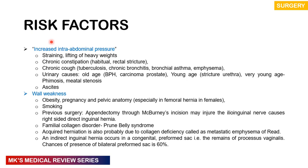Risk factors are largely either increased intra-abdominal pressure or weakness in the wall. Things that increase intra-abdominal pressure include straining, weight lifting, chronic constipation, chronic cough such as TB, chronic bronchitis, bronchial asthma, emphysema. Urinary causes include old age with BPH or carcinoma of prostate, stricture of the urethra in young individuals, and phimosis or meatostenosis in the very young. It may also be due to ascites.